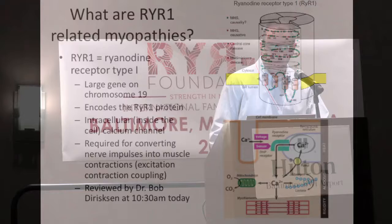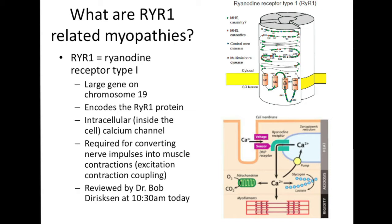I thought it was important to start off with some definitions so that we're all talking about the same thing. We're all here because we either have RYR1 myopathy, or we have family members or friends that have it, or we work clinically or in the laboratory studying it. But what is RYR1 myopathy? I think it's very important that we all think about the terms and what this means, so I'm going to break it down into its two different parts.